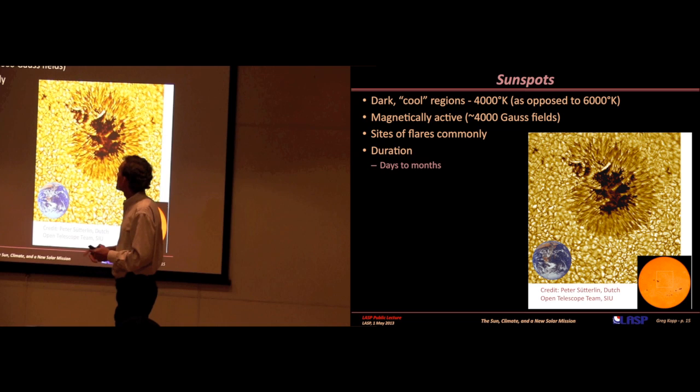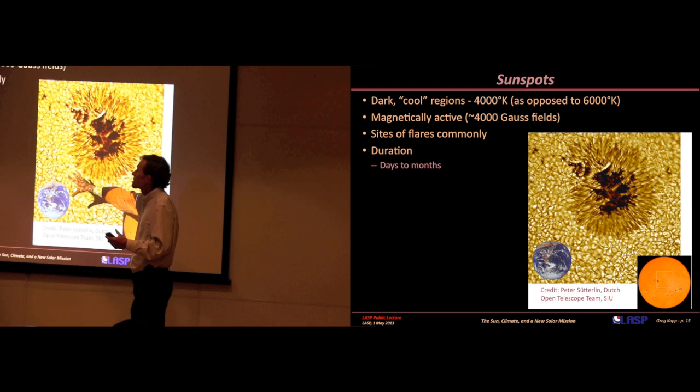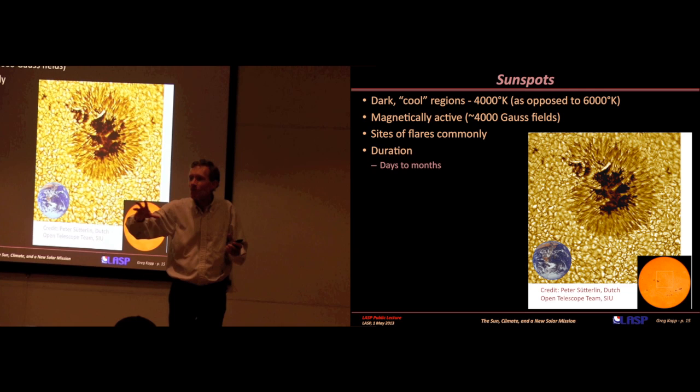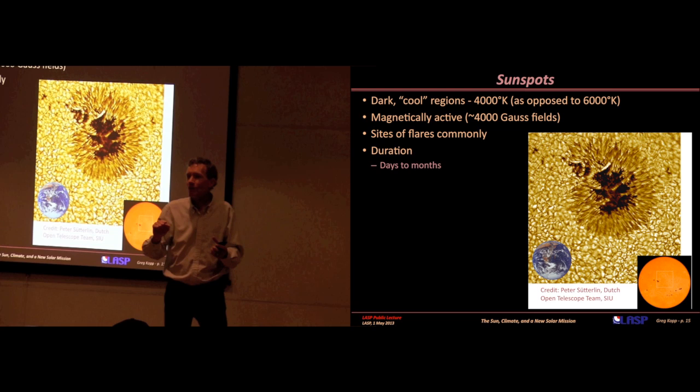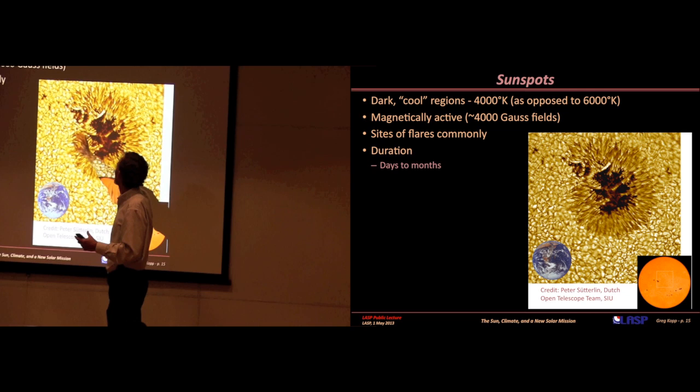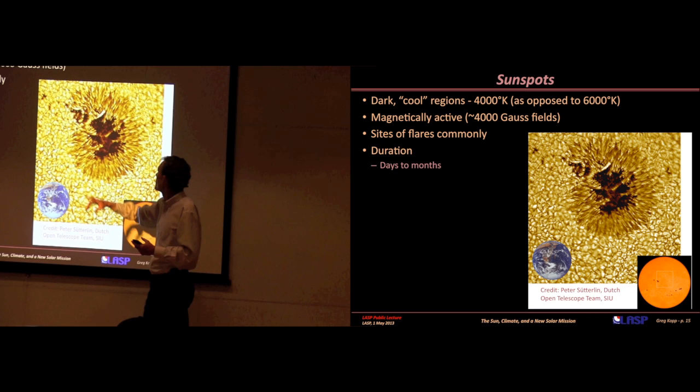Back to our sunspots. They're dark, cool regions. The surface of the sun is about 6,000 degrees Celsius. These sunspots are cool, if you can call 4,000 degrees Celsius cool. They're also large. This is a medium-sized sunspot compared to the Earth. They're magnetically active. The magnetic field in the center is 8,000 times the strength of the Earth's local magnetic field, extended over a region that can be the size of the Earth.